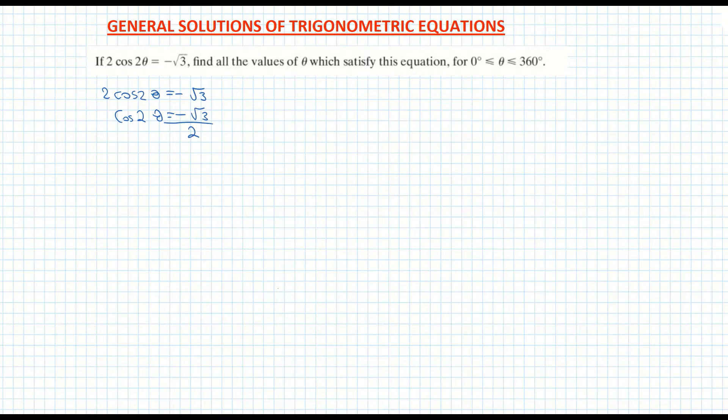Next thing I'm going to do now is solve this so I'm going to find the inverse of minus root 3 over 2. So that means that 2 theta is equal to cos inverse of minus root 3 over 2. So I'm going to go to my calculator now and find the cos inverse of minus root 3 over 2. And that's giving me 150 degrees.